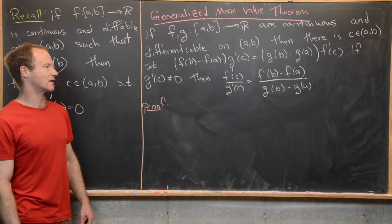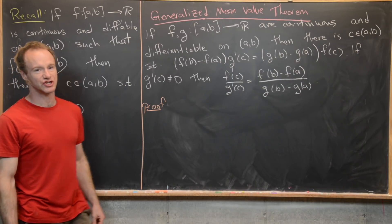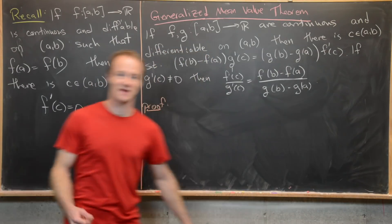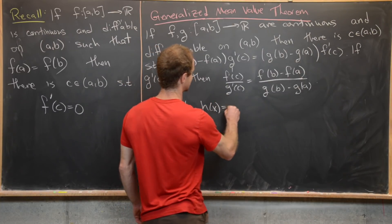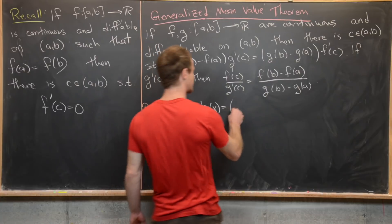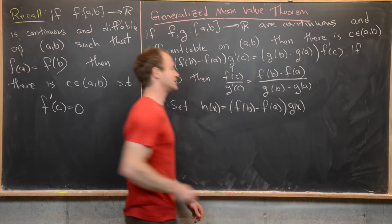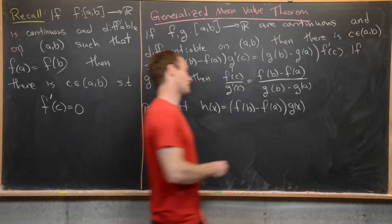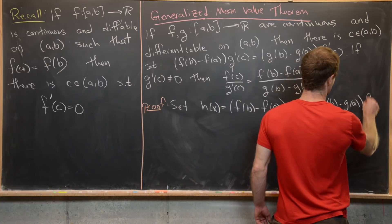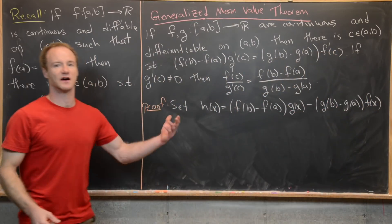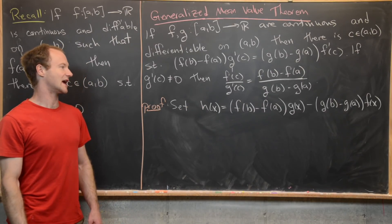Let's look at the proof. The idea is to introduce a new function related to f and g that we can apply Rolle's theorem to. We define h(x) = [f(b) − f(a)] · g(x) − [g(b) − g(a)] · f(x). Notice that f(b) − f(a) is just a constant multiple of g(x), and g(b) − g(a) is a constant multiple of f(x), so h(x) is a linear combination of g(x) and f(x).